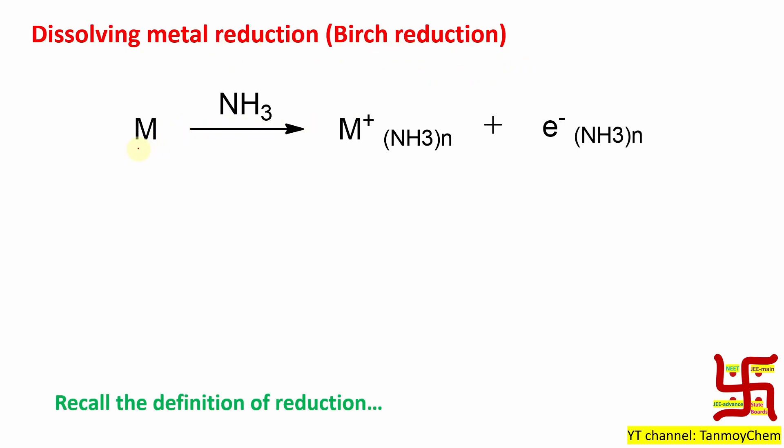First, let us know what is Birch reduction or dissolving metal reduction. In this case, first a metal, more specifically if I say Group 1 metals like sodium, potassium, lithium, etc., are treated with liquid ammonia. Liquid ammonia means low temperature obviously. The Group 1 metal, for example lithium, releases one electron and becomes lithium plus.